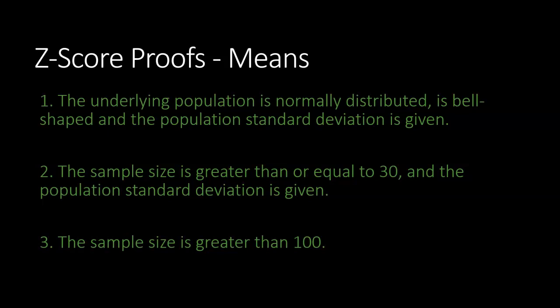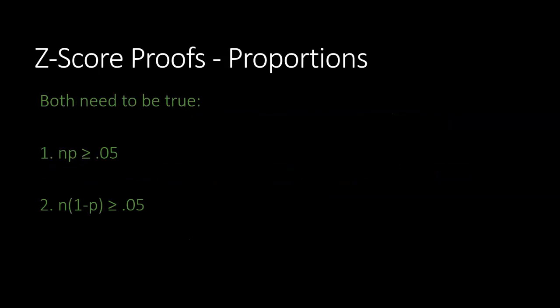Those are our proofs for the means. If any one of those three are true, then we are allowed to use a z-score. If we're dealing with proportions, both of these proofs need to be true. N times p, your sample size times your proportion, needs to be greater than or equal to 0.05, and N times 1 minus p needs to be greater than or equal to 0.05. Both of these need to be true when we're dealing with proportions.